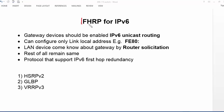Now we are going to configure First Hop Redundancy Protocol for IPv6. Before going to the actual configuration, we need to know that gateway devices could be a Layer 3 switch or a router, and they should have IPv6 unicast routing enabled. In order to forward IPv6 unicast traffic, we need to execute the command 'IPv6 unicast routing' on devices. We can only use link-local addresses (FE80) to implement FHRP for IPv6.